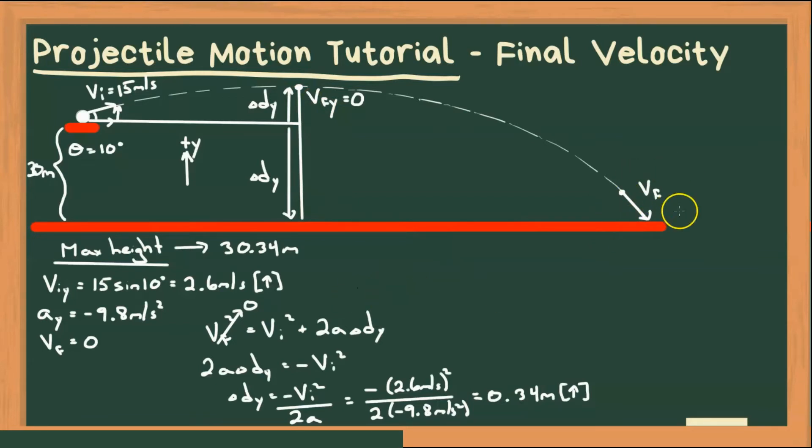All right, well what if you wanted to know final velocity at impact? Well, what a lot of students do is they use their equations of motion to figure out final velocity, but you have to remember that is only our final velocity in our y direction. Now we do need to find that, so let's go ahead and find that first. I'm going to look at velocity at impact.